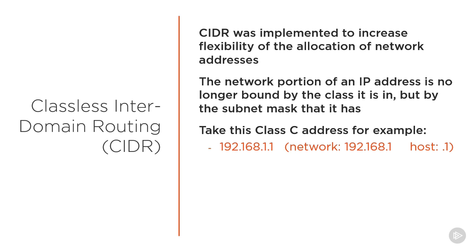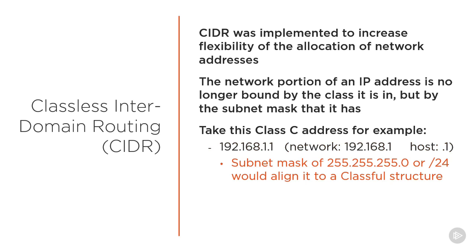In a classable structure, the first three octets, or 192.168.1, would be the network portion of the address, while the last octet, or .1, would be the host portion of the address. In a classless structure, the same network and host bits can be maintained if a subnet mask of 255.255.255.0 is assigned, or /24 for the shorthand representation of the subnet mask.